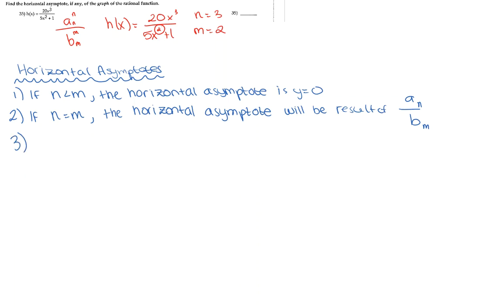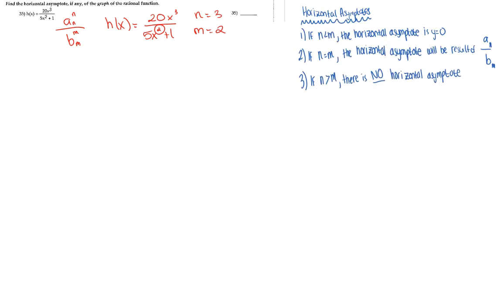For case 3, if n is greater than m, there is no horizontal asymptote. So following our rules for a horizontal asymptote, let's go ahead and look at our given rational function and determine what our horizontal asymptote will be if there is a horizontal asymptote.